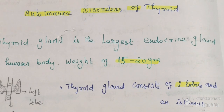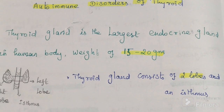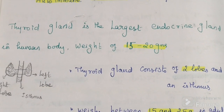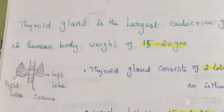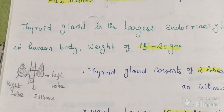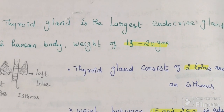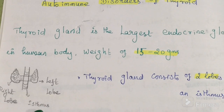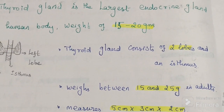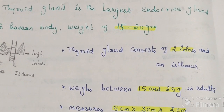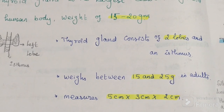The thyroid gland is the largest endocrine gland in the human body, weighing nearly 15 to 20 grams. In the human neck, we have two lobes — right and left — combined together with the isthmus. The right and left lobes combined with the isthmus is the normal anatomy of the thyroid, measuring 5 by 3 by 2 centimeters.